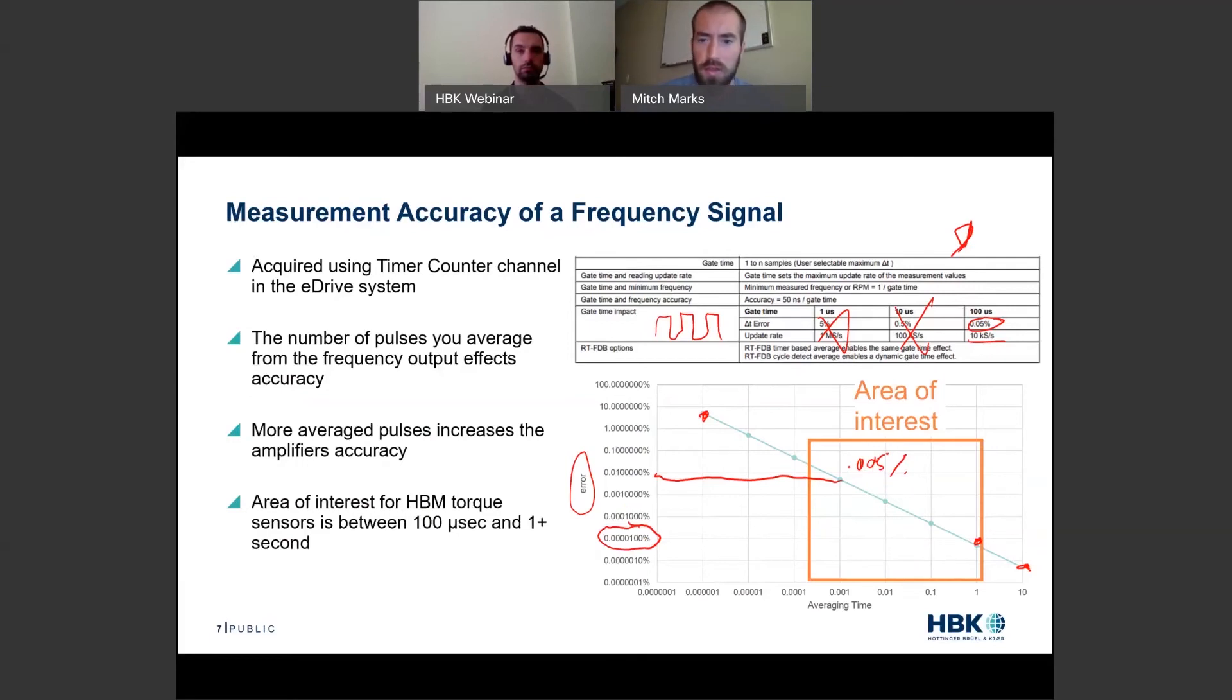So the longer you average the signal for, the lower the measurement uncertainty of your amplifier. When you're doing things like efficiency equations and you're taking a half second or one second of data, you can say I'm good. I don't really have to worry about that measurement error. This isn't true for all people who measure frequency signals. Please look at what the measurement error on a frequency signal is. It is relevant. We do a particularly good job at it when you take the actual area of interest into account. There's a lot of words to say we're really good at this. We measure the torque signal more accurately than anybody else.